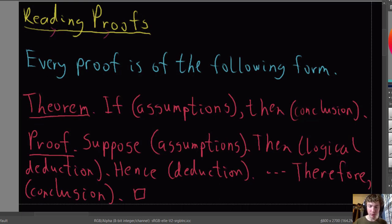After you suppose those assumptions, then there's a series of sentences that are logical deductions. So each of those sentences is going to say something which must be true if we assume everything we've said so far is true. So each of these is one more step. You add one more statement which must be true.